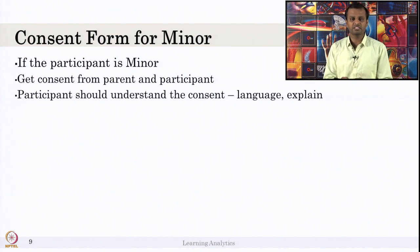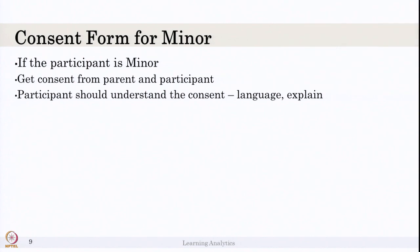For consent involving minors, if the participant is a minor, you must obtain consent from the parent as well as the participant. If the participant is a school student, write the consent form in language they can understand, avoiding excessive technical terms. For very young students such as 6 or 7 year olds, the teacher may need to explain the consent form to both the student and the parents, who will then provide consent for data collection.